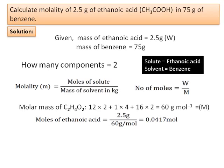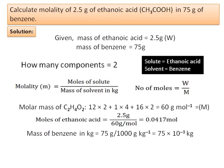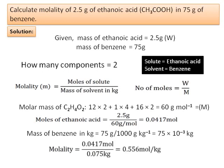Mass of solvent (benzene) in kg = 75 × 10⁻³ kg = 0.075 kg. Molality = 0.0417 mol ÷ 0.075 kg = 0.556 mol/kg. So the molality of the solution is 0.556 mol per kg.